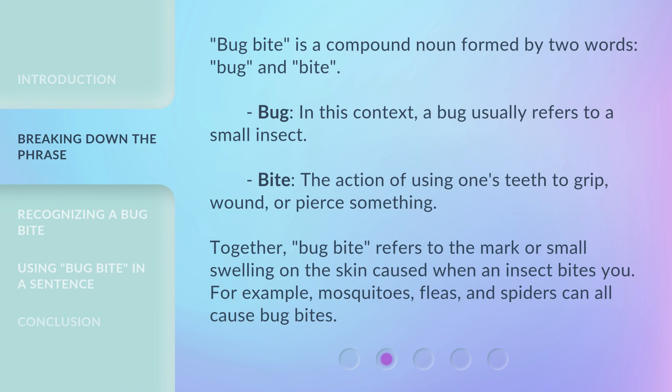Bug bite is a compound noun formed by two words: bug and bite. In this context, a bug usually refers to a small insect. Bite is the action of using one's teeth to grip, wound, or pierce something. Together, bug bite refers to the mark or small swelling on the skin caused when an insect bites you. For example, mosquitoes, fleas, and spiders can all cause bug bites.